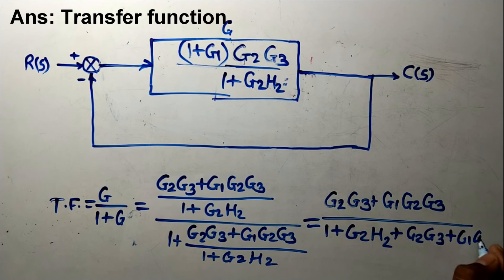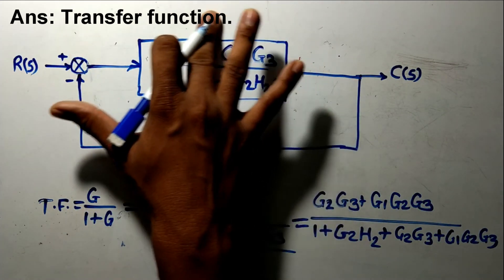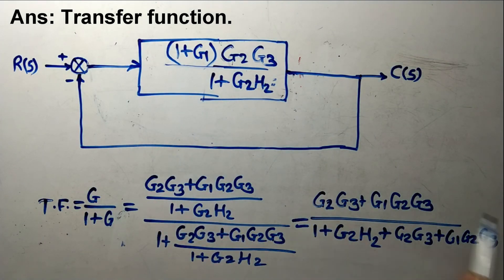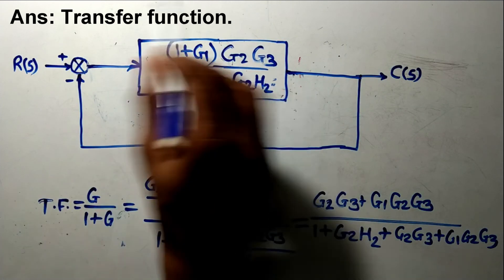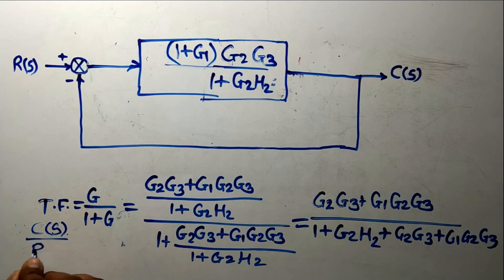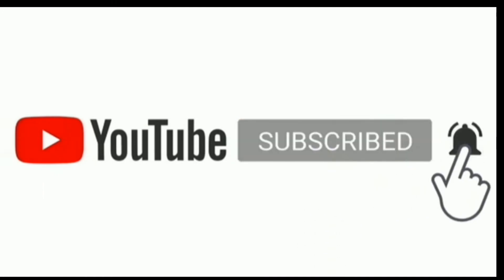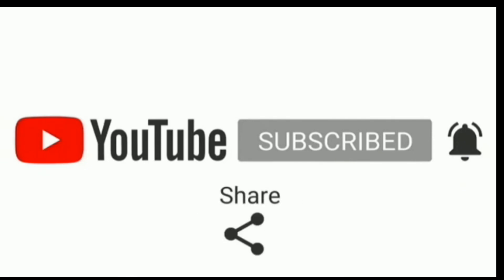This is our final answer, and thus we can solve any block diagram using the block diagram reduction technique. The transfer function of this block diagram is this result. If asked to reduce it to a single block, write a block with R(s) as input and C(s) as output, where the transfer function is C(s)/R(s) — that is, the Laplace transform of output upon Laplace transform of input. Thank you, friends. If you like this video, please subscribe to our channel and press the bell icon for notifications. Like, comment, and share. Thank you.